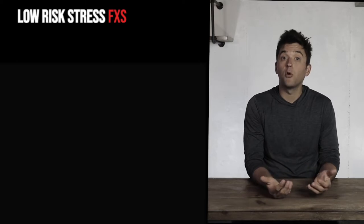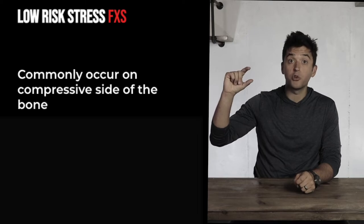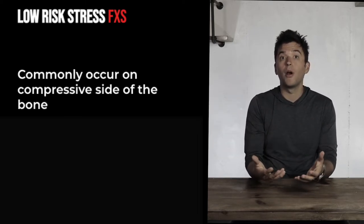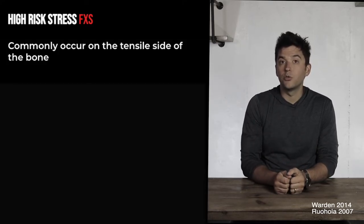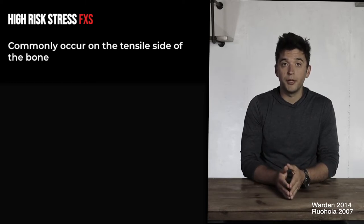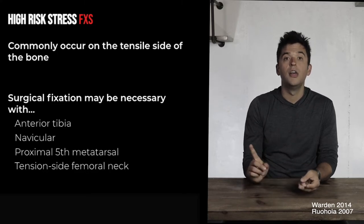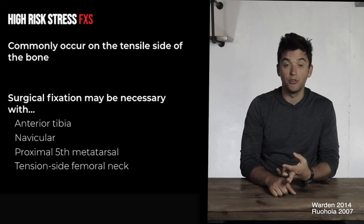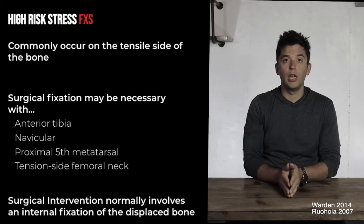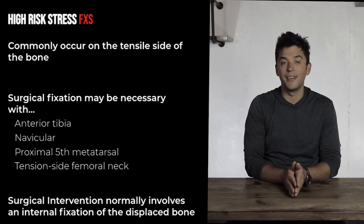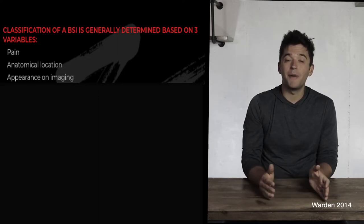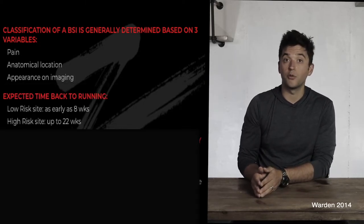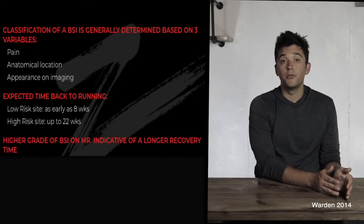Low-risk bone stress injuries tend to occur on the compressive side of the bone, and tend to heal better based on anatomy and blood flow. High-risk injuries occur on the tensile side and can often require surgical fixation — including anterior tibial cortex stress fractures, femoral neck stress fractures on the tensile side, fifth metatarsal stress fractures, and navicular stress fractures. Bone stress injuries are classified based on pain, imaging grade, and location. Expected return to running ranges from 8 to 22 weeks.